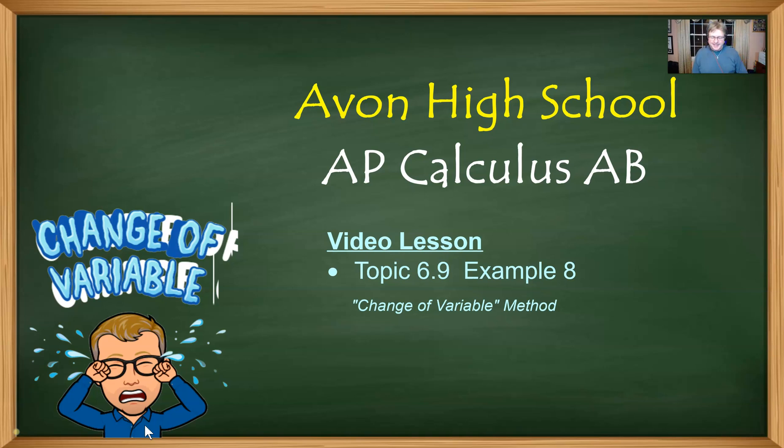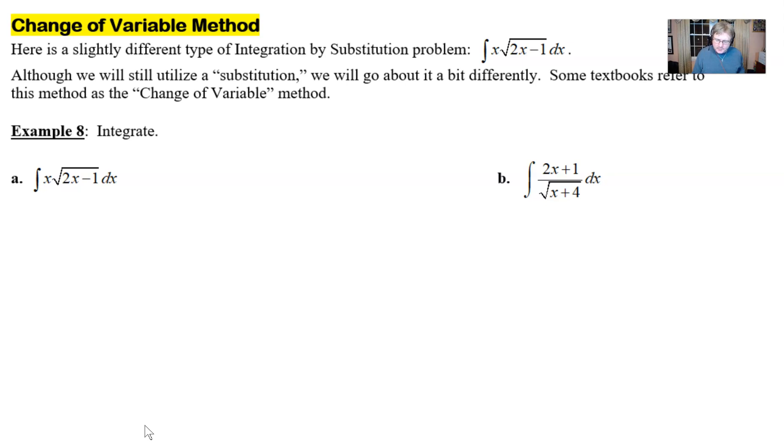So we're not quite done yet, but we're getting pretty close here. And what we're going to do here is a method that's sometimes referred to as the change of variable method. I don't mean to cry when I say change of variable method, it was really the only bitmoji that was available. But really what we're doing here is we're using u substitution with just a bit of a twist.